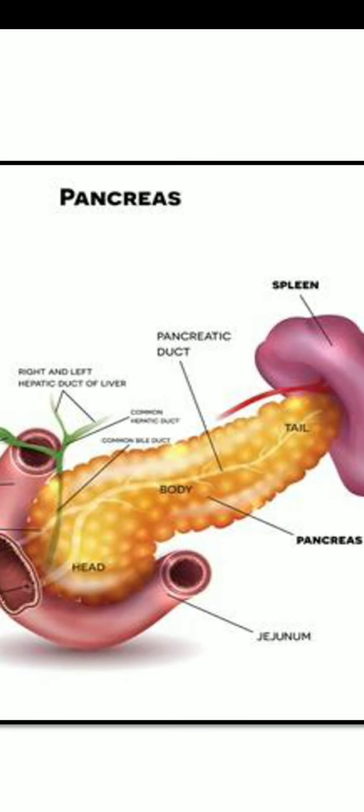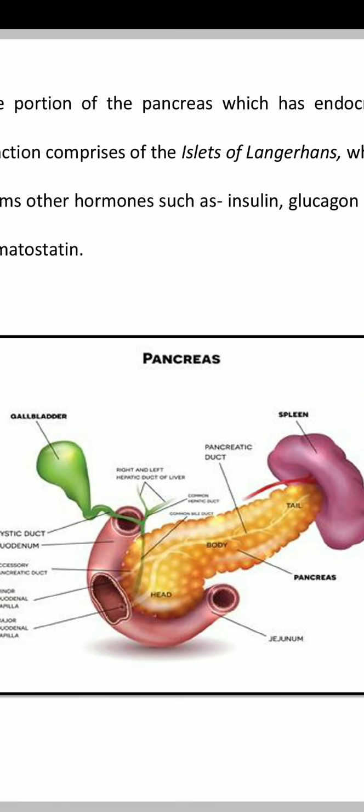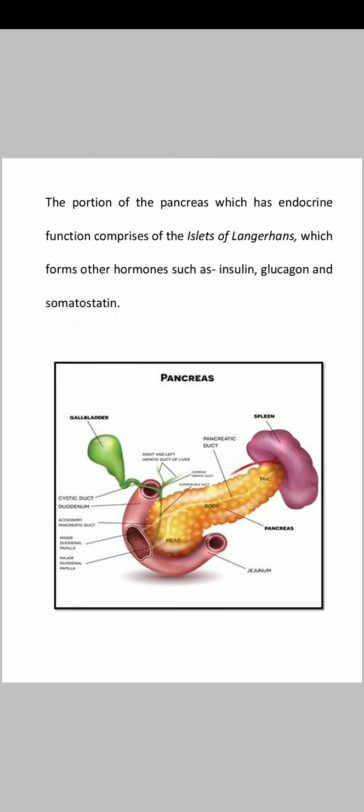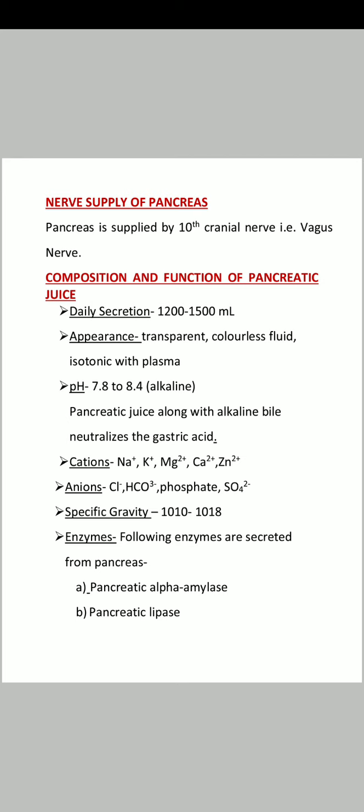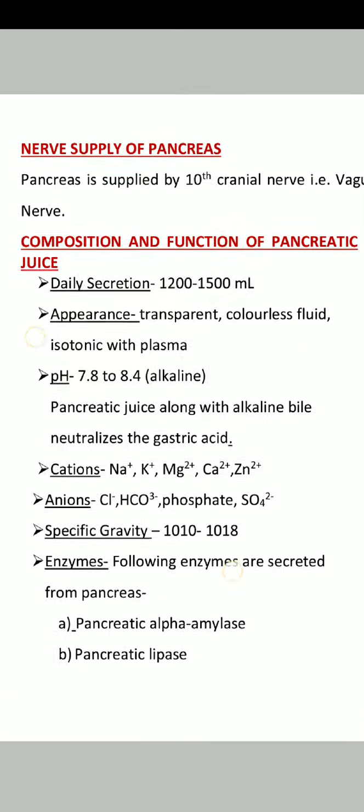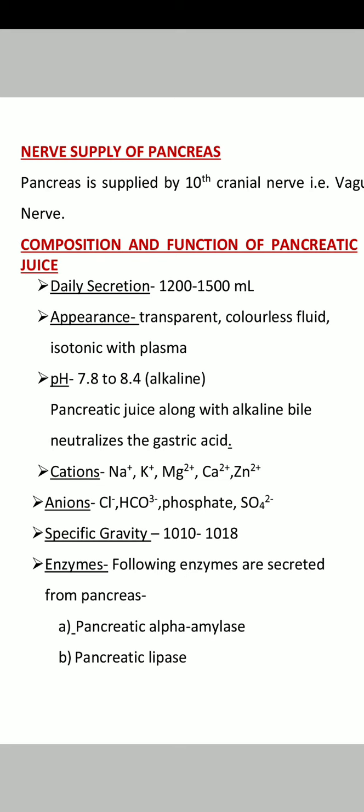There is also a common bile duct. This is your pancreas overall structure inside. Now we see the nerve supply of pancreas — the pancreas is supplied by the 10th cranial nerve, that is your vagus nerve. Next, the composition and function of pancreatic juices: daily secretion is about 1200 to 1500 ml, appearance is transparent colorless fluid, it is isotonic with plasma, and its pH is 7.8 to 8.4, making it alkaline in nature.